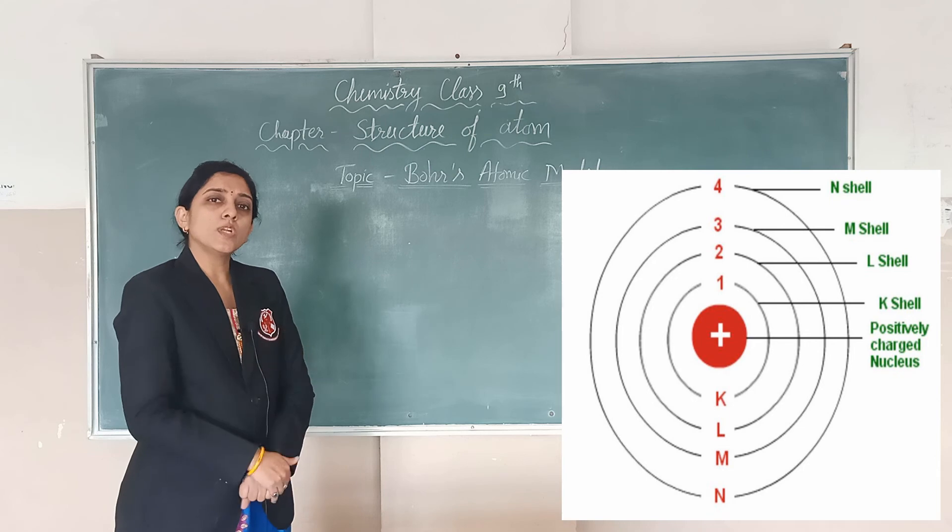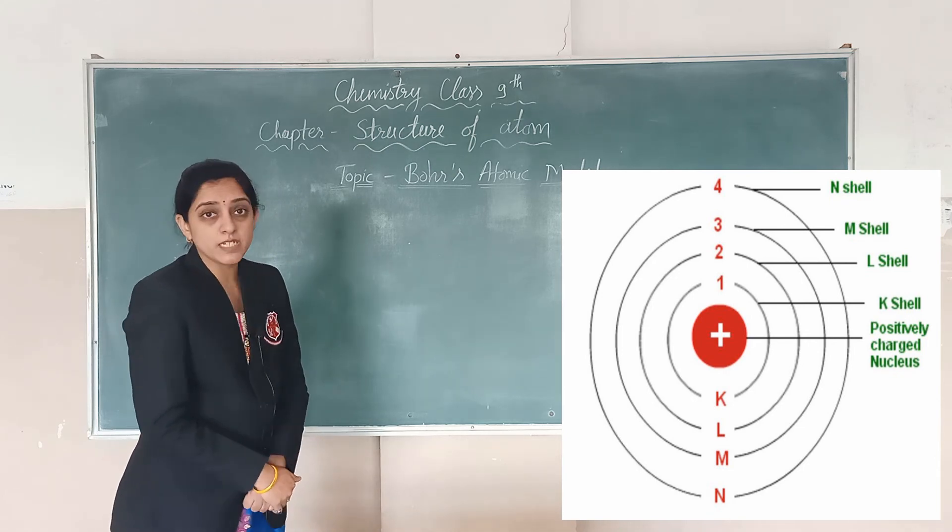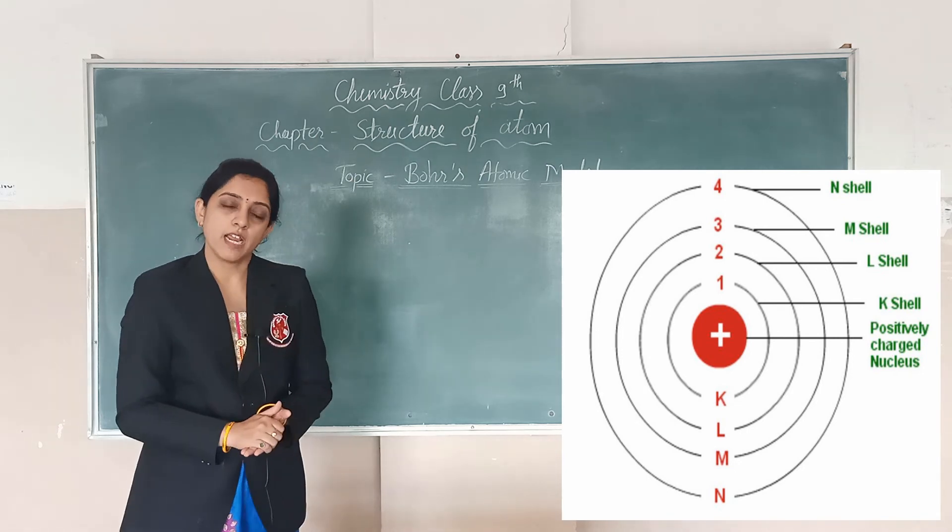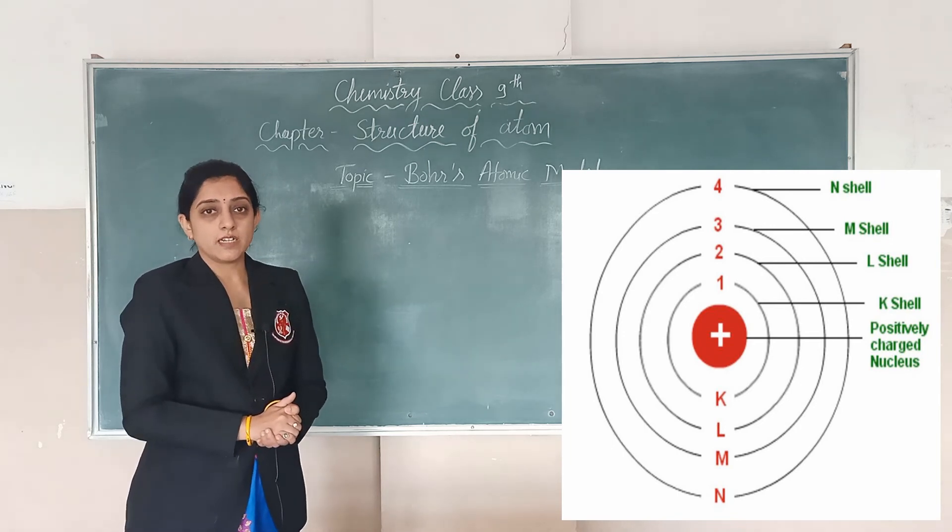Now last, there are only two situations where electrons leave this shell. First, when it absorbs energy and when it absorbs energy, it jumps to a higher shell and this is called the excited state.